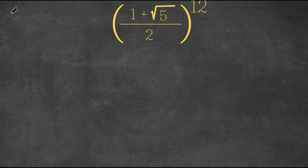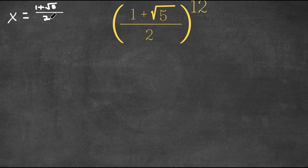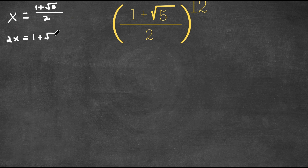What I'm first going to do is set the variable x equal to what's in the parentheses, meaning one plus the square root of five over two. So now if this is true, I'm going to multiply by two on both sides, meaning two x is equal to one plus square root of five. So now if I subtract by one on both sides, I get two x minus one is equal to square root of five.